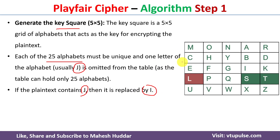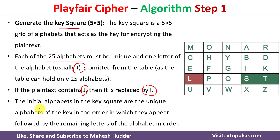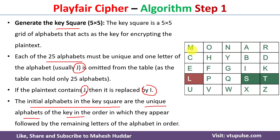To form this key square, the initial alphabets are the unique alphabets of the key in the order in which they appear, followed by the remaining letters of the alphabet in order. For example, the key given to us is 'Monarchy'. So we take the unique letters M, O, N, A, R, C, H, Y and place them in the key square first, followed by the remaining letters of the alphabet.